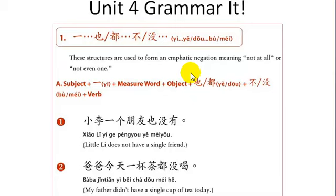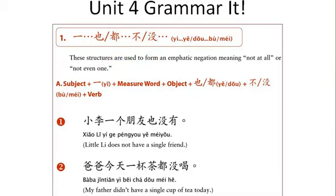Here is a structure you saw in the dialogue when 理由 said 好像一个位子都没有. So: 一, then some part of speech or word, then 也 or 都, then 不 or 没. These structures are used to emphatically negate something, meaning 'not at all' or 'not even one.'